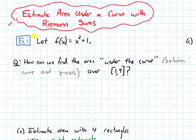I want to motivate this with an example. Let's let f of x be x squared plus 1. The question is, how can we find the area under the curve — meaning between the curve and the x-axis — over the interval from 1 to 9? So let's first draw a picture of this.